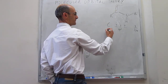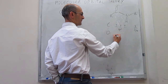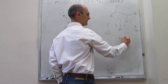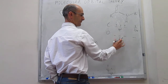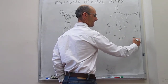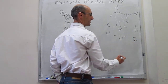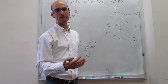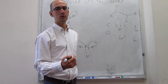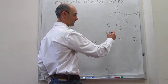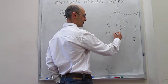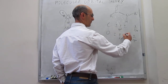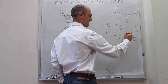Oxygen is also sp2 hybridized, with three sp2 orbitals and one unhybridized 2pc orbital. Oxygen has six valence electrons (2s2 2p4). Those six electrons are placed as follows: one, two, three, four, five, and six — with lone pairs occupying some of the sp2 orbitals.